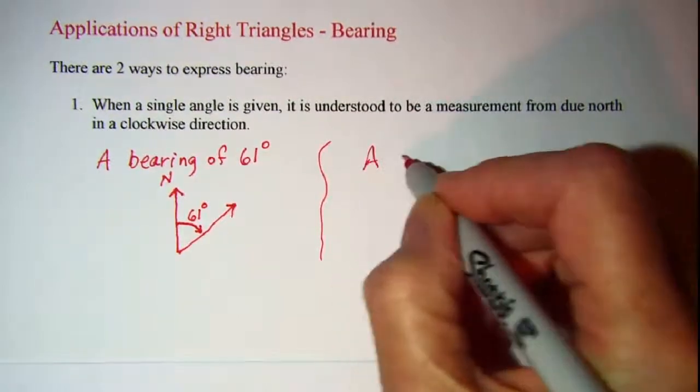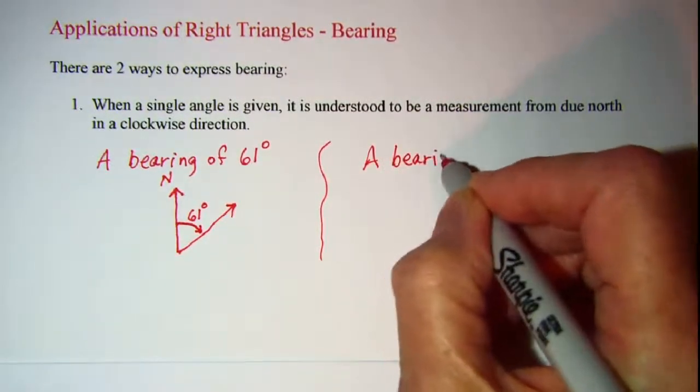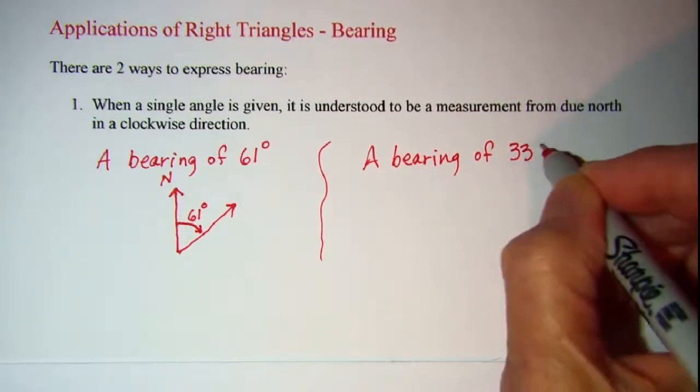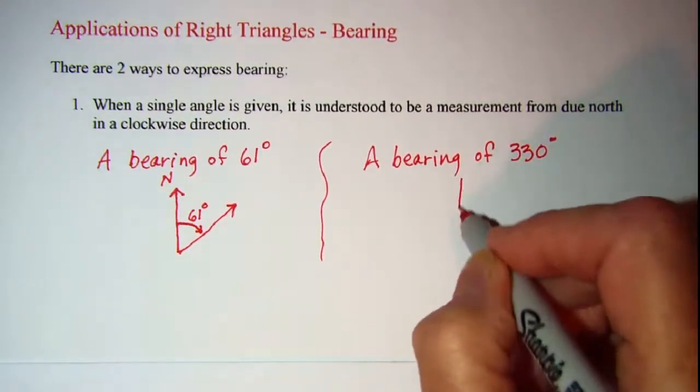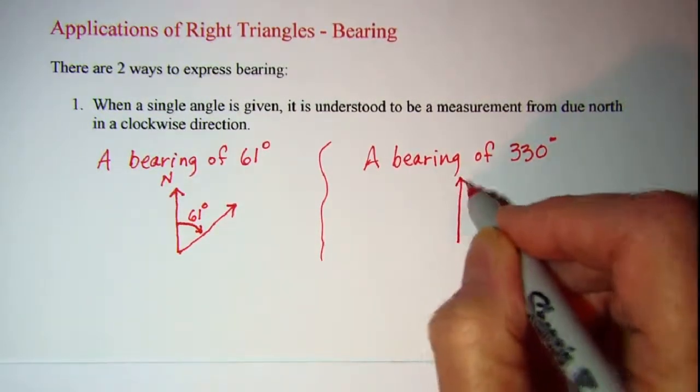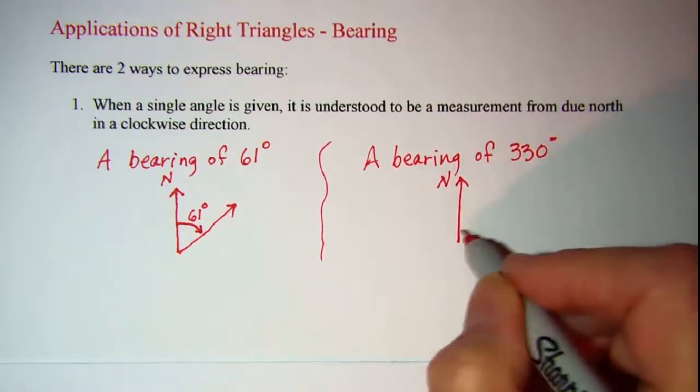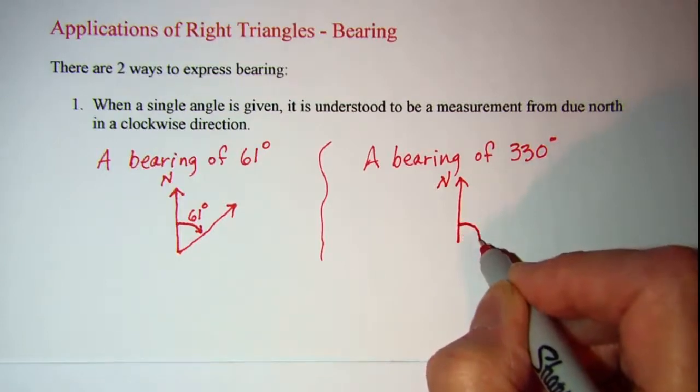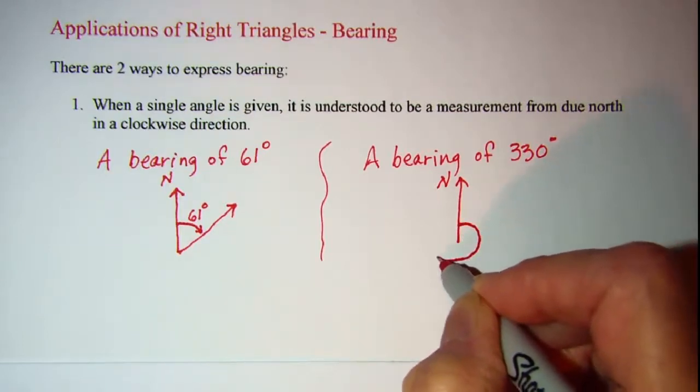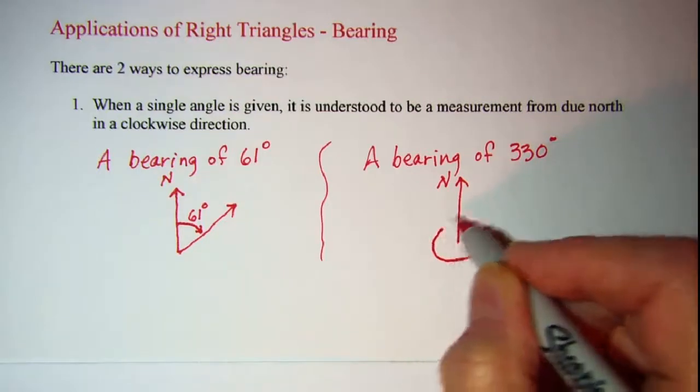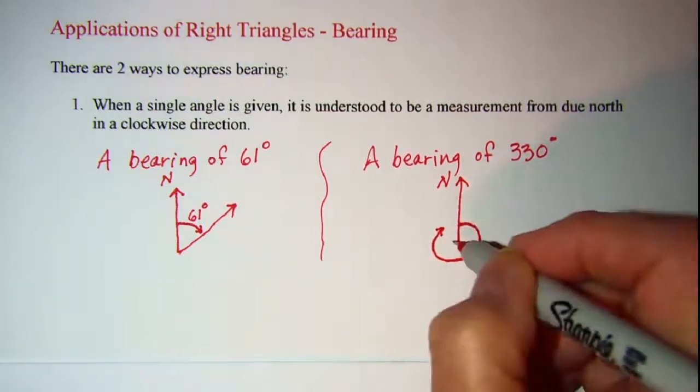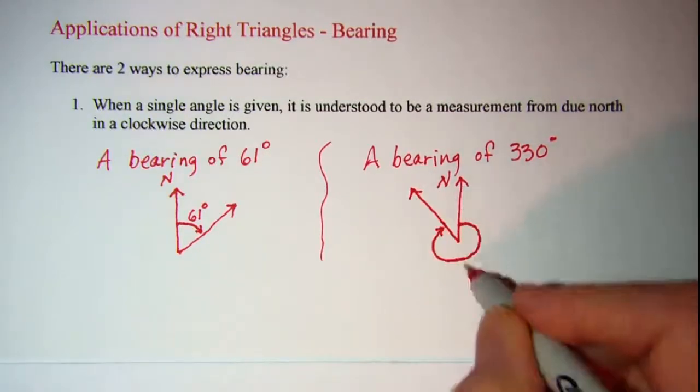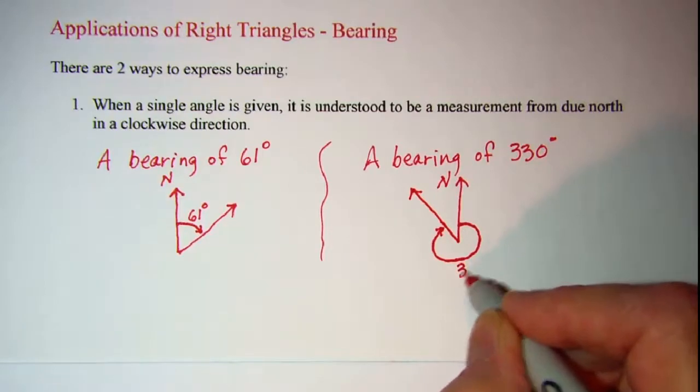A bearing of 330 degrees. Again, we start with due north and we would go 330 degrees, which is almost a complete revolution. It is actually 30 degrees short of a complete revolution, so our angle here would be 330 degrees.